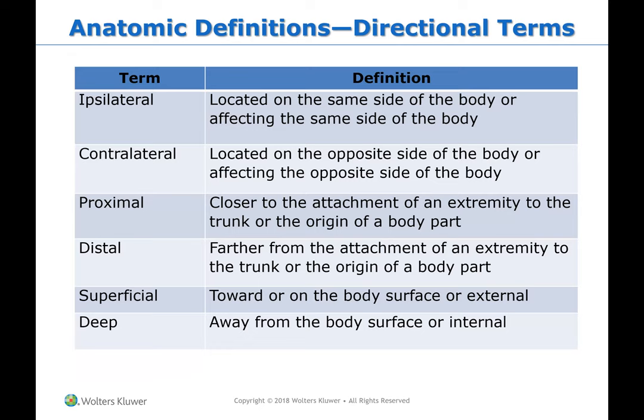Ipsilateral is located on the same side of the body. Contralateral is on the opposite side of the body. Proximal is closer to the attachment — we use that all the time. Distal is farther from the attachment of an extremity to the trunk or origin of the body part. For example, with the common femoral vein, we use the terms proximal and distal common femoral vein. Superficial is toward or on the body surface, and deep is away from the body surface or internal.